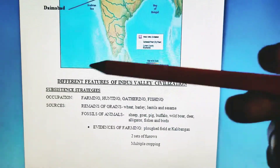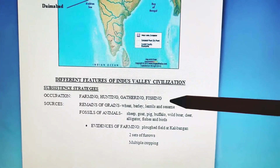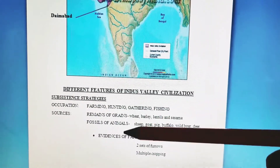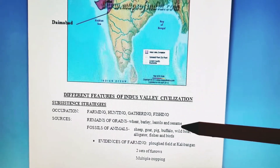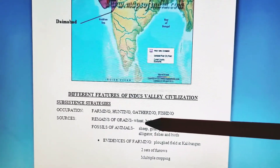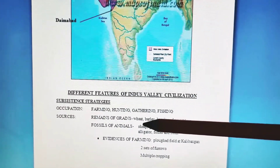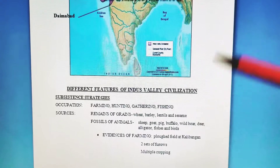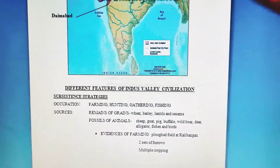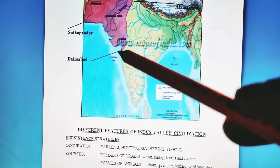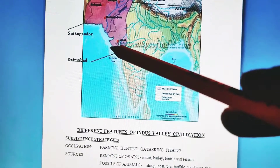To recap, the subsistence strategies of Indus Valley people had farming, hunting, gathering, and fishing as the major occupations. Grain remains include wheat, barley, lentils, and sesame. Note that rice is missing here — while wheat and rice are the staple crops of North and South India, Indus Valley people were not aware of rice cultivation. Evidence of rice cultivation appears only at the Lothal site after 1900 BCE.